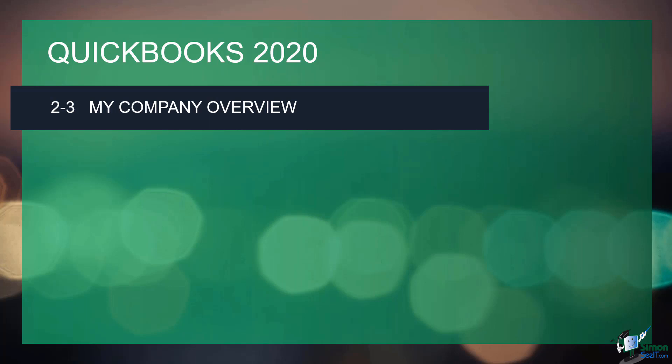There's a feature in QuickBooks called My Company. Basically, when we went through the EasyStep interview and set up our company file, the very first screen asked us to put in information about the company — like the address, federal tax ID number, website, email, and things like that. If we misspelled something or forgot to put some of that information in, this is where we go to edit it. This section is called My Company.